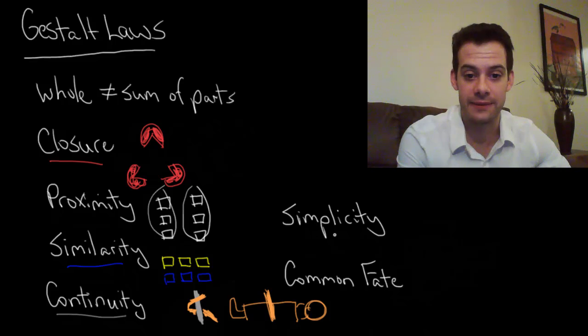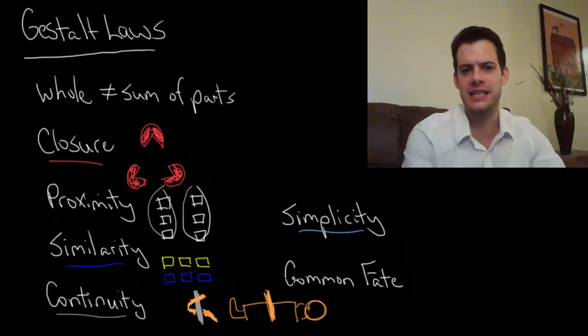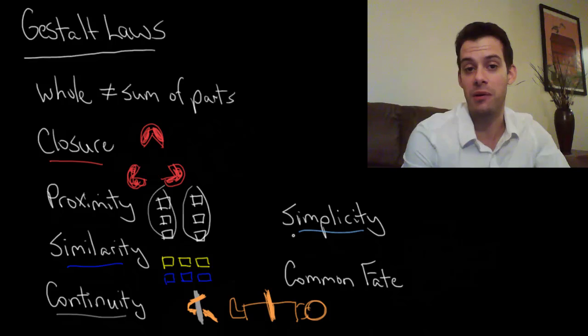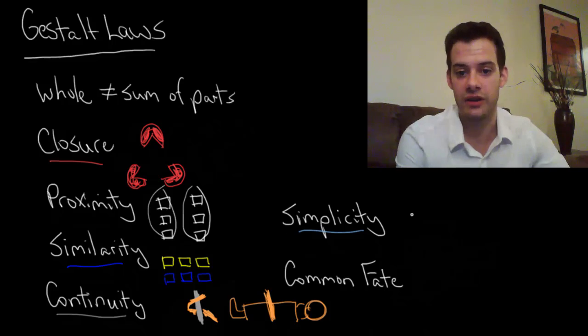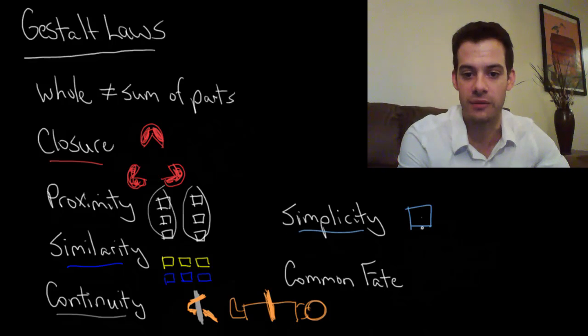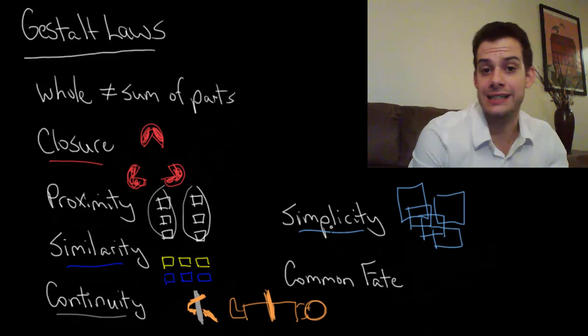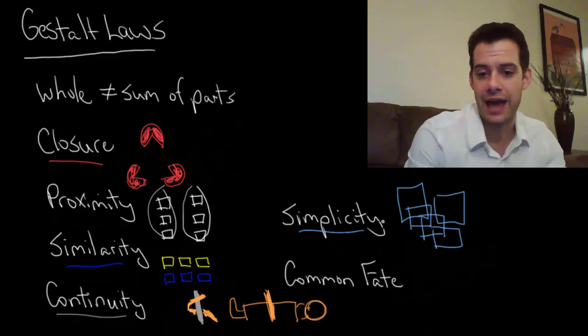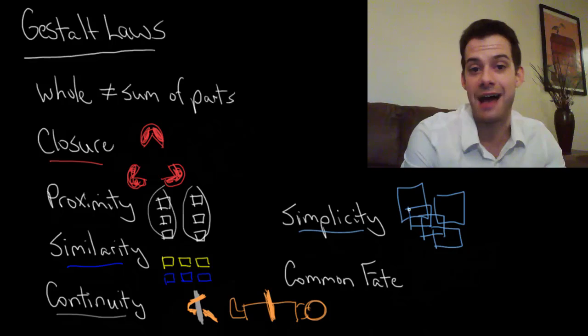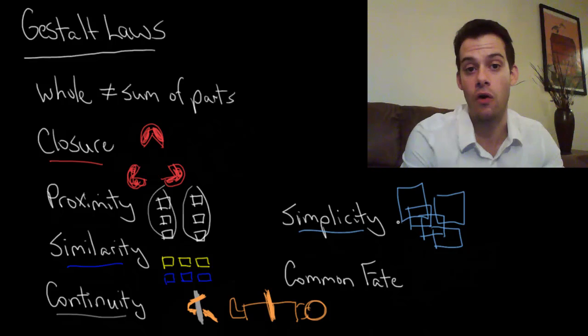Next we have the idea of simplicity. So simplicity just says that we tend to perceive the simplest explanation for the things that we see, rather than equally plausible but more complicated explanations. So for instance if we had some picture here. Okay and I said to you what is this a picture of? You'd probably look at it and say okay well it looks like one, two, three, four, five boxes on top of each other right? Five squares that are all overlapping.